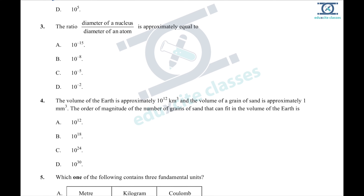Question 3: the diameter of a nucleus to the diameter of an atom. The radius of an atom is of the order of 10⁻¹⁰ m, and the radius of a nucleus is around 10⁻¹⁵ m. The fraction is the same whether you use diameter or radius. So 10⁻¹⁵ divided by 10⁻¹⁰ gives 10⁻⁵, which is option C.